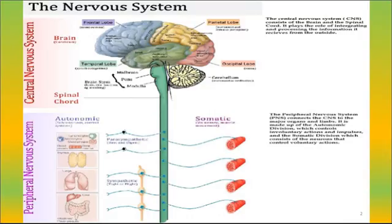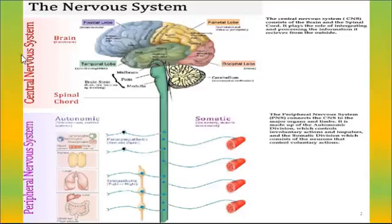I started this with information on the peripheral nervous system — I just think it would help you to review it. You may want to come back to these pictures as you go over different things. This is a really good picture showing the central nervous system and then the peripheral nervous system.